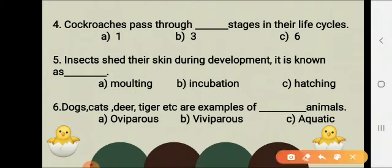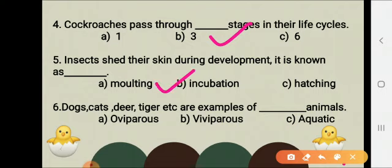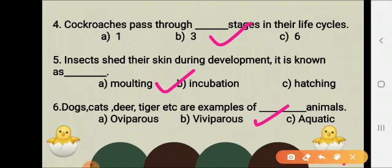Cockroaches pass through three stages in their life cycle: egg, nymph, and adult cockroach. Insects shed their skin during development — this is known as molting. Dogs, cats, deer, tigers etc. are examples of viviparous animals, because they give birth to their young ones.